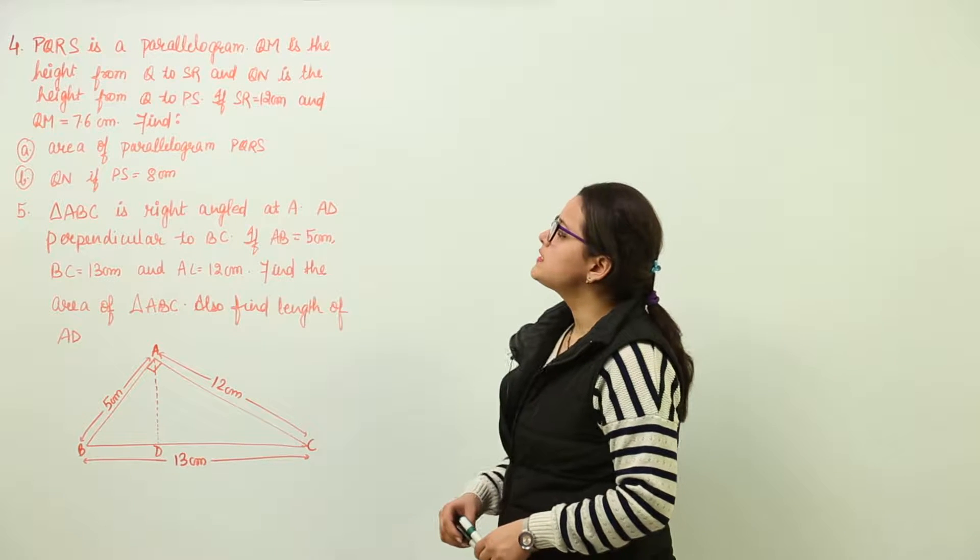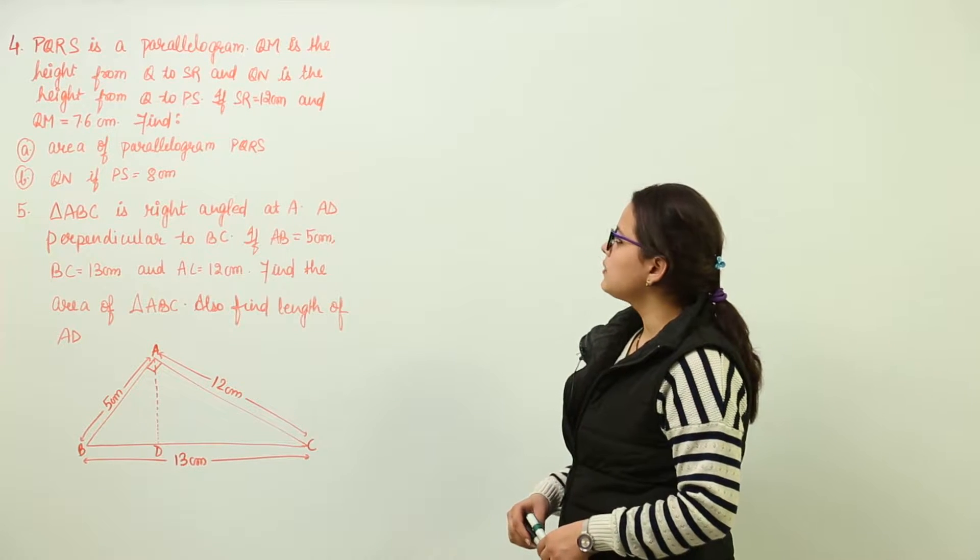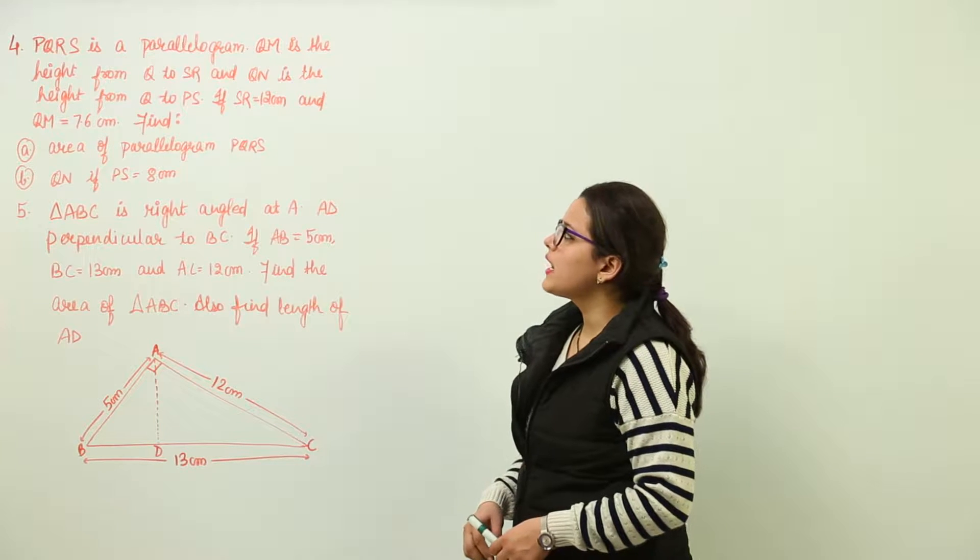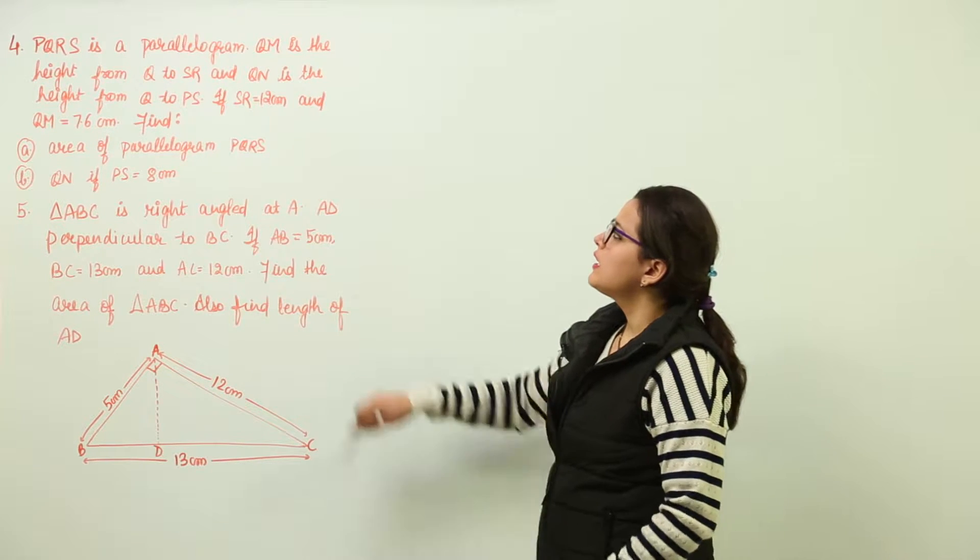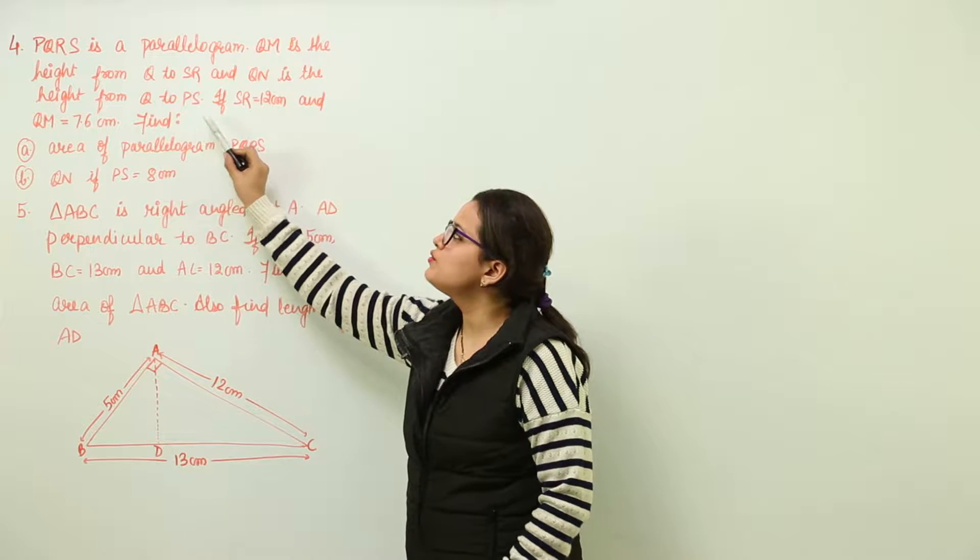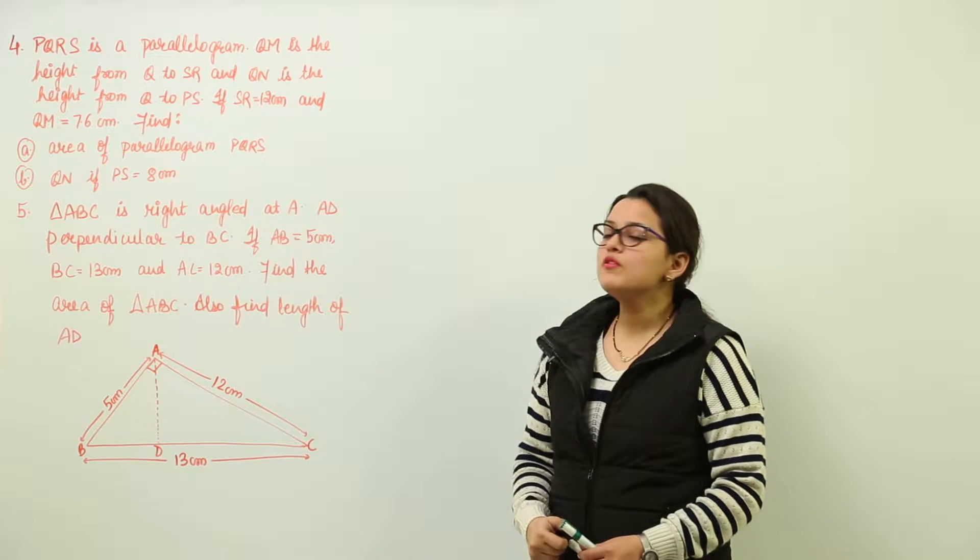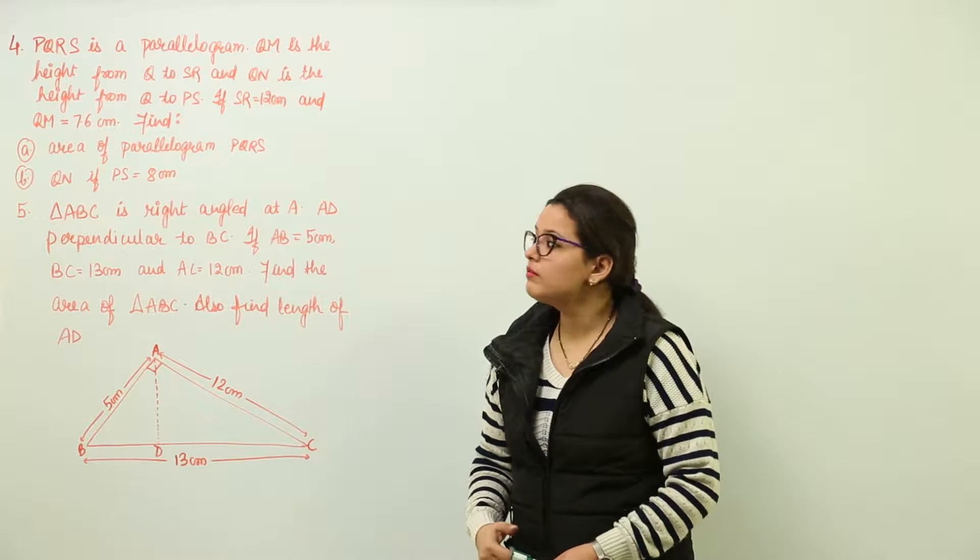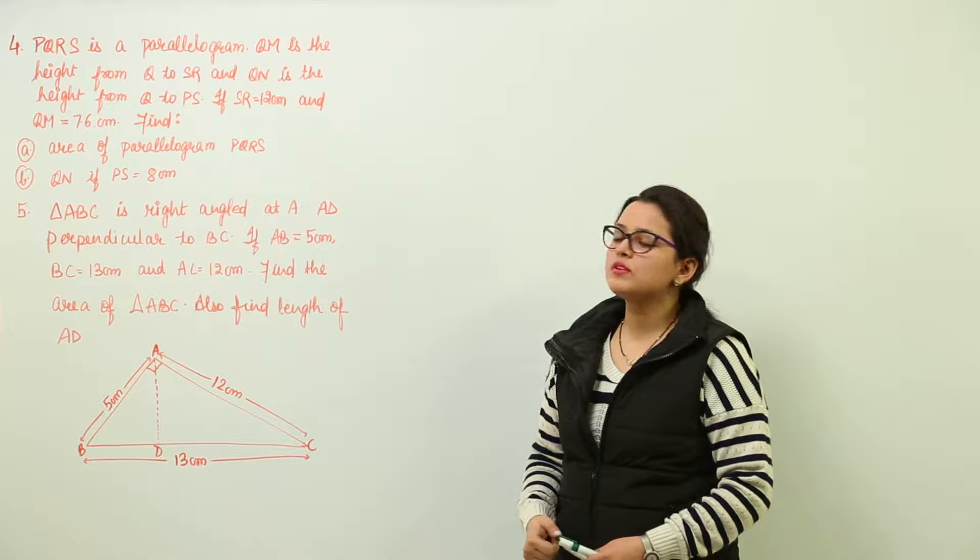The next question we have is PQRS is a parallelogram where QM is the height from Q to SR and QN is the height from Q to PS. If SR is given as 12 and QM is given as 7.6,